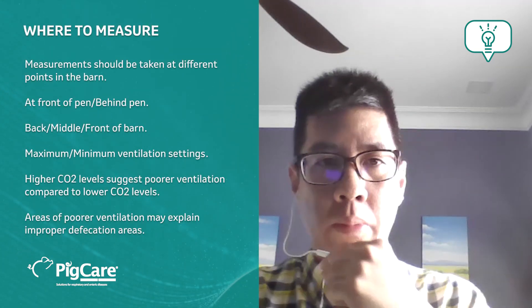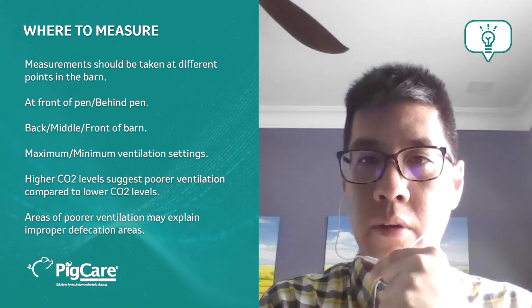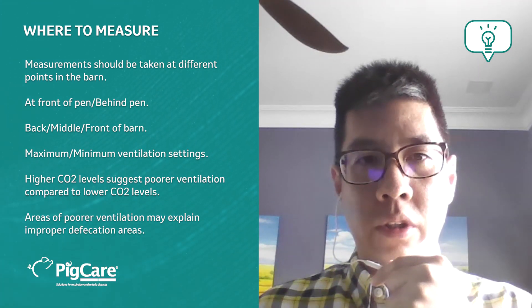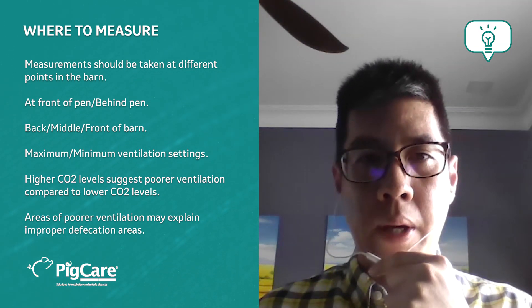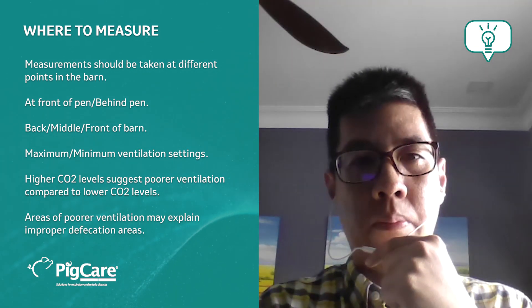Where do we take measurements? First of all, we should take measurements at different points in the barn. Different areas may have different rates of ventilation. One suggestion would be that we can take them at the front of the pen, behind the pen, and at different points in the barn - in the front, back, and middle.